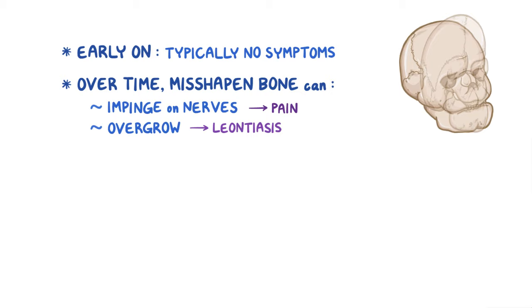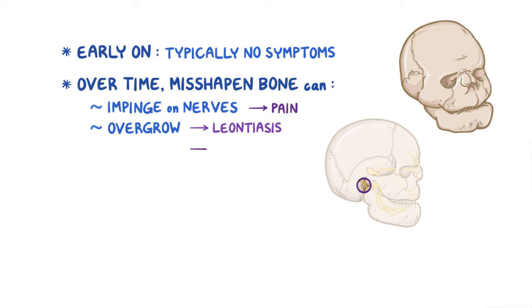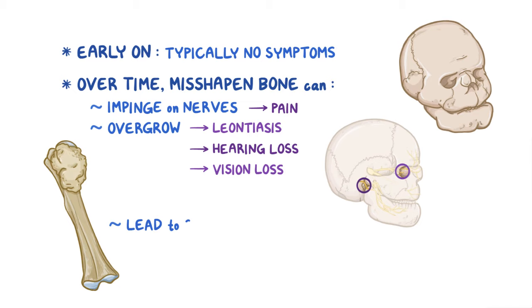The bony overgrowth can also narrow the auditory foramen and impinge on the auditory nerve, leading to hearing loss. If there's bony overgrowth that impinges on the optic nerve as it passes through the optic canal, that can lead to vision loss. Sometimes the accelerated bony growth can lead to genetic mutations that cause a bone cancer called osteosarcoma. When that happens, it's referred to as Paget's sarcoma.